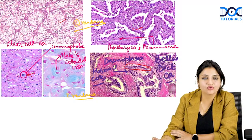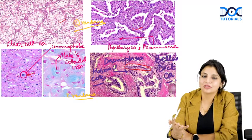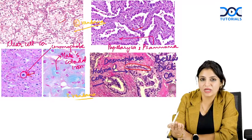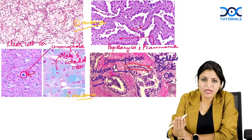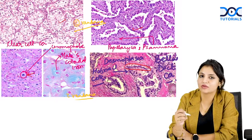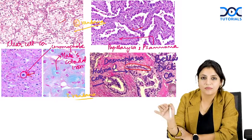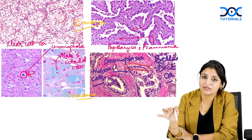Remember that renal cell carcinomas invade the renal vein. They can also present with a lot of paraneoplastic manifestations, with hypertension, hypercalcemia, and polycythemia being the common ones. Hepatic dysfunction is another paraneoplastic manifestation that can occur with renal cell carcinoma.